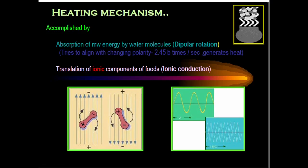Food also contains ionic compounds like common salt (NaCl), which dissociates into Na⁺ and Cl⁻ in aqueous media. These ions can travel independently. In the presence of an oscillating microwave electric field, ions try to align with or move toward the opposite polarity.